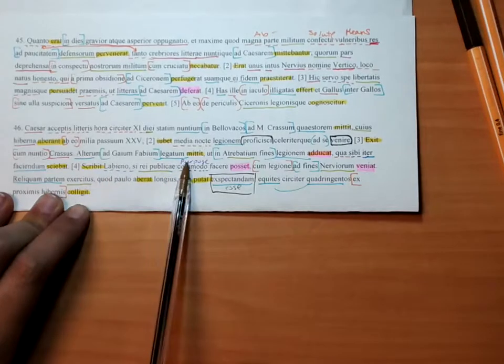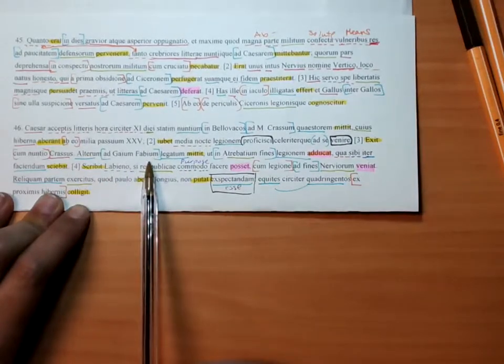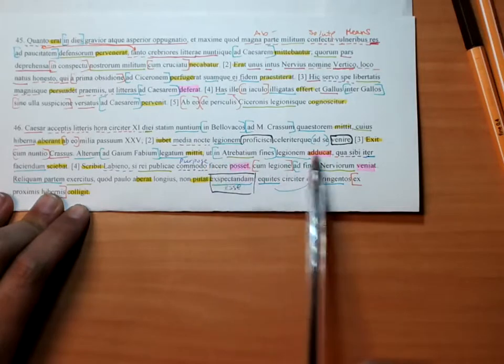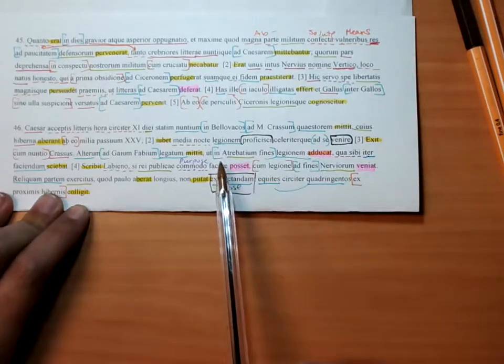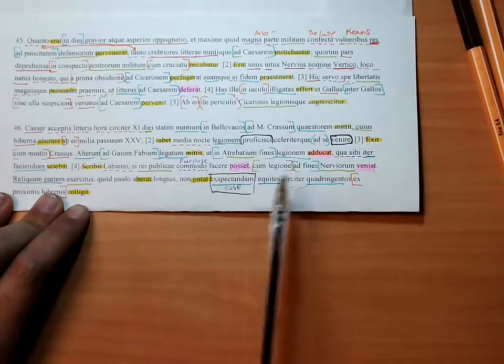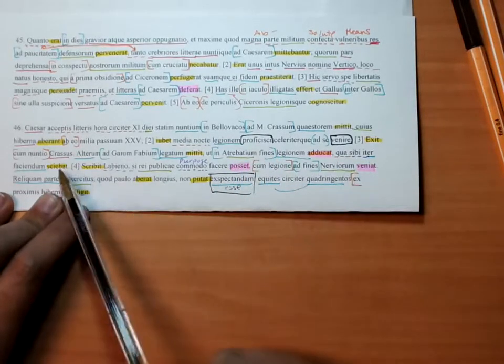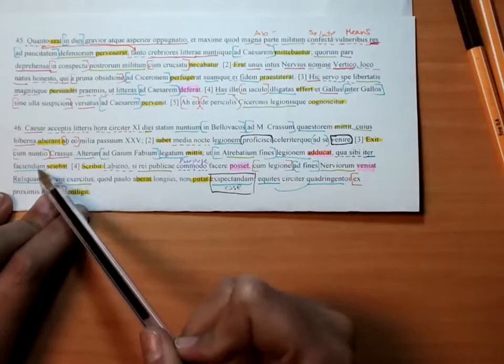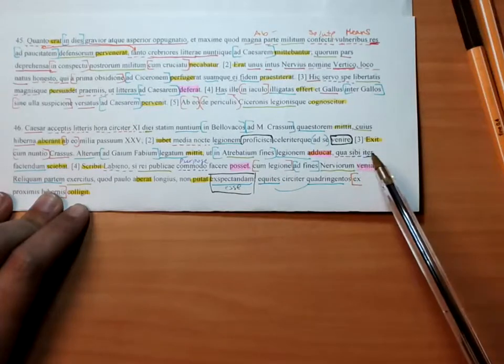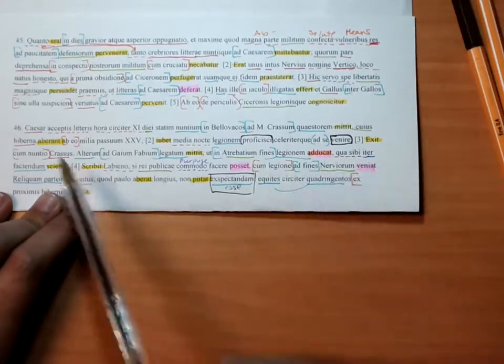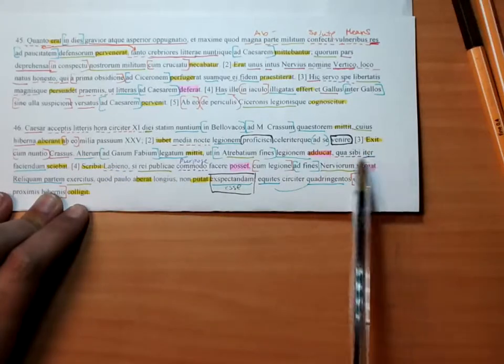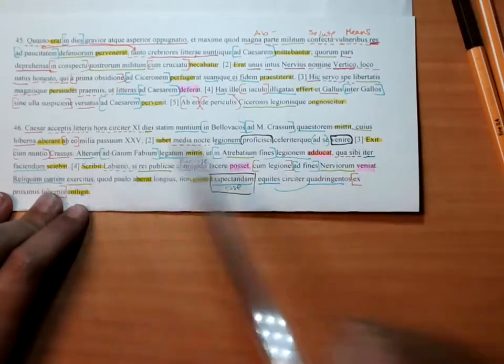He sends another lieutenant to Gaius Fabius in order that he may lead the legion into the borders of the Atrabati, where he knew a road must be made by himself.